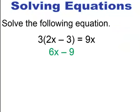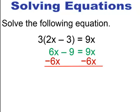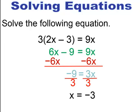Do the distributive property to get 6x minus 9 equals 9x. Move the 6x over to the 9x by subtracting, and you're left with negative 9 equals 3x. Divide through by 3 to get x equals negative 3.